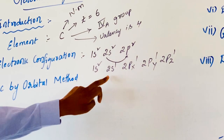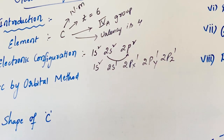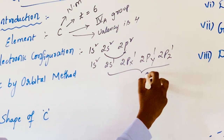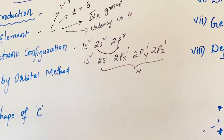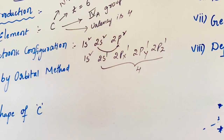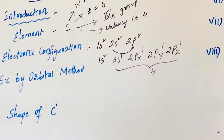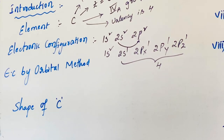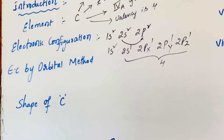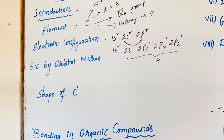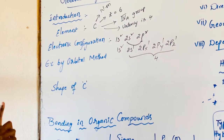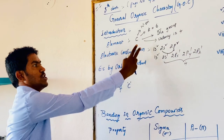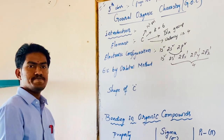In the excited state, the total number of unpaired electrons is 4. Carbon can have only one excited state — the first excited state. A second excited state is not possible for the carbon atom.